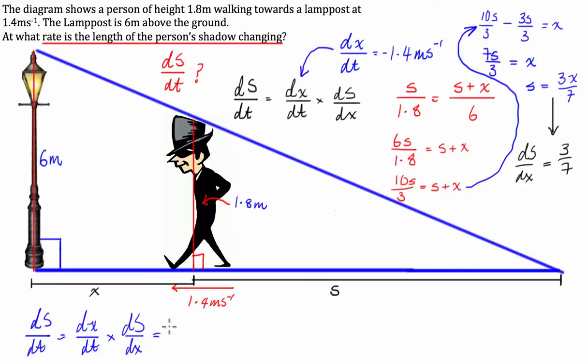Now this one is given: negative 1.4 multiplied by 3 over 7. If you put that into your calculator, you're going to get negative 0.6.